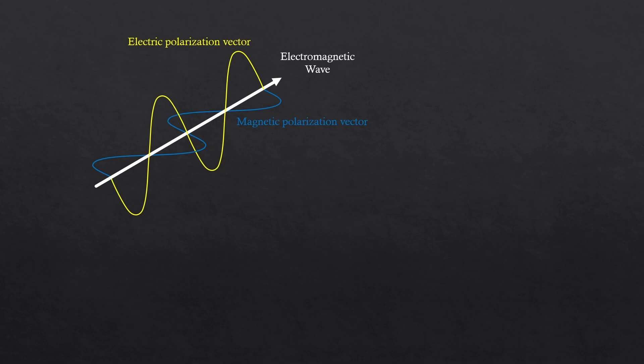You all know that an electromagnetic wave consists of electric and magnetic polarization vectors. And we also call electromagnetic wave light. In experiments, people normally refer electric polarization as the polarization of the electromagnetic wave.